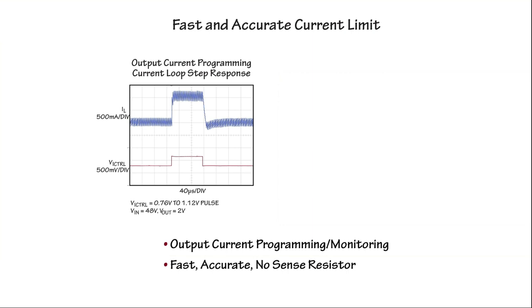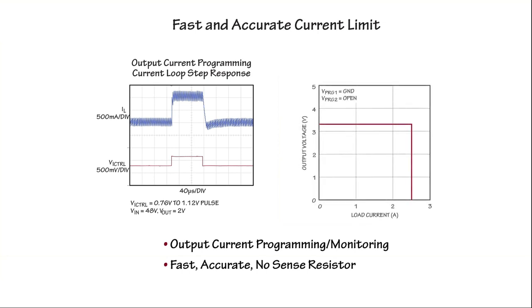The average current loop is internally compensated and automatically adjusted based on the operating conditions to optimize both speed and stability. This remarkable feature results in an adjustable brick wall style current limit, making the LTC7103 ideal for constant current applications such as battery chargers or LED lighting.